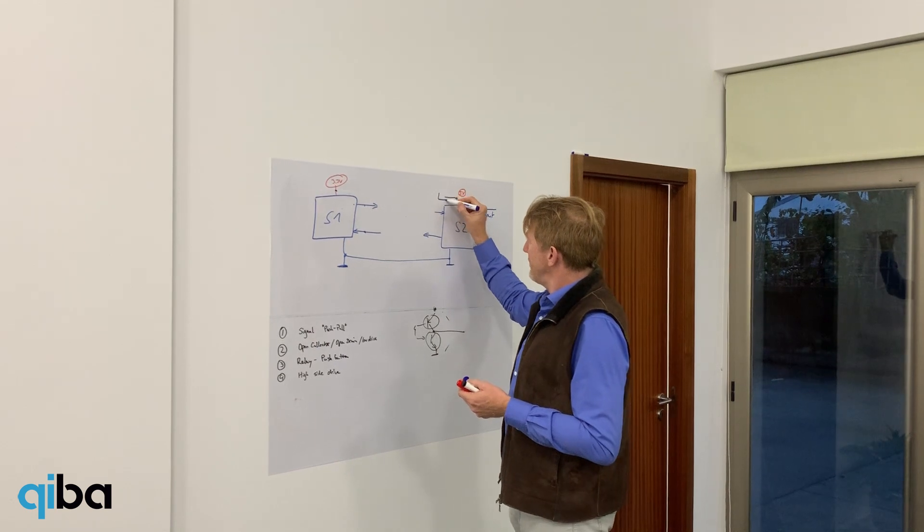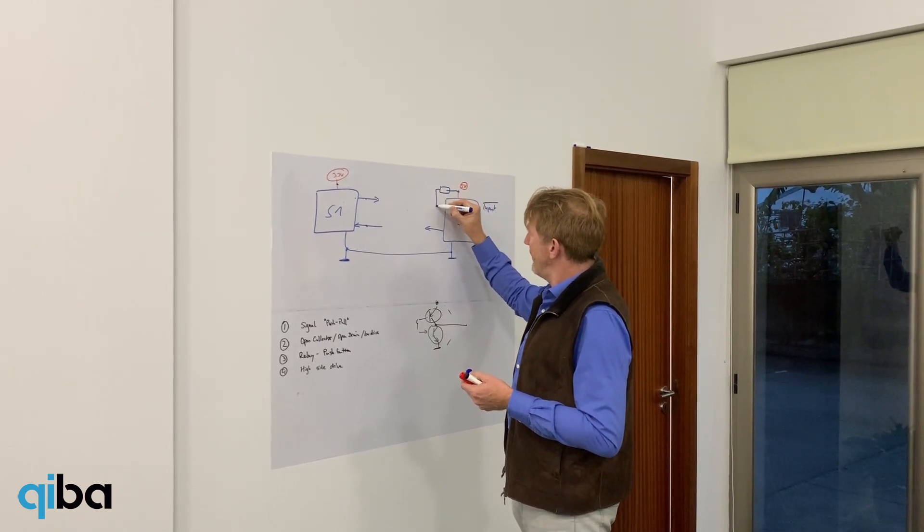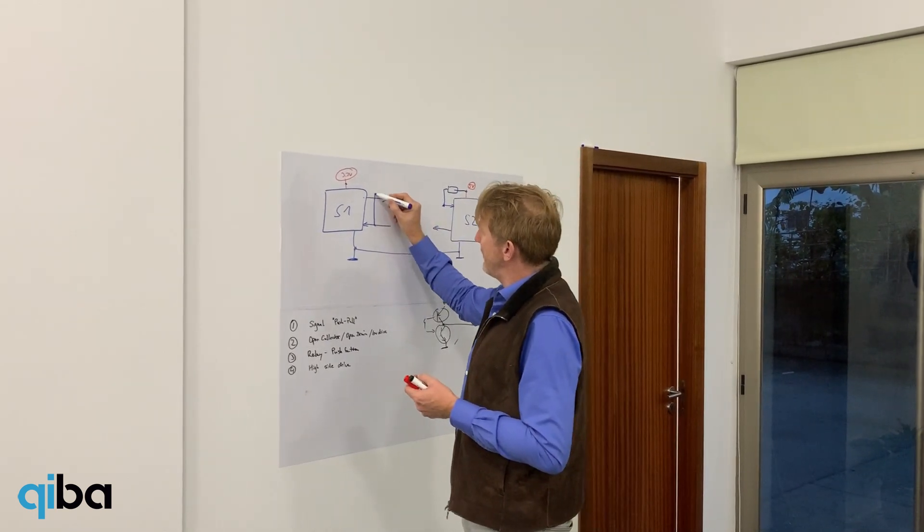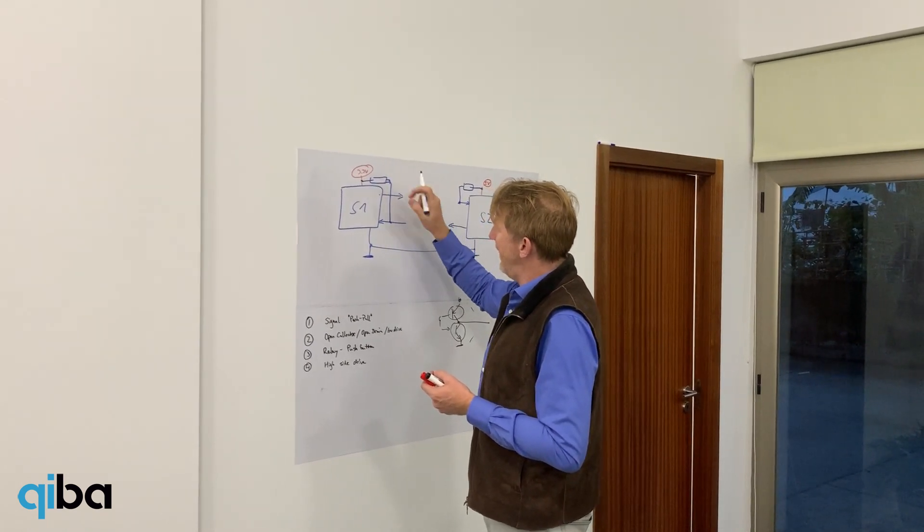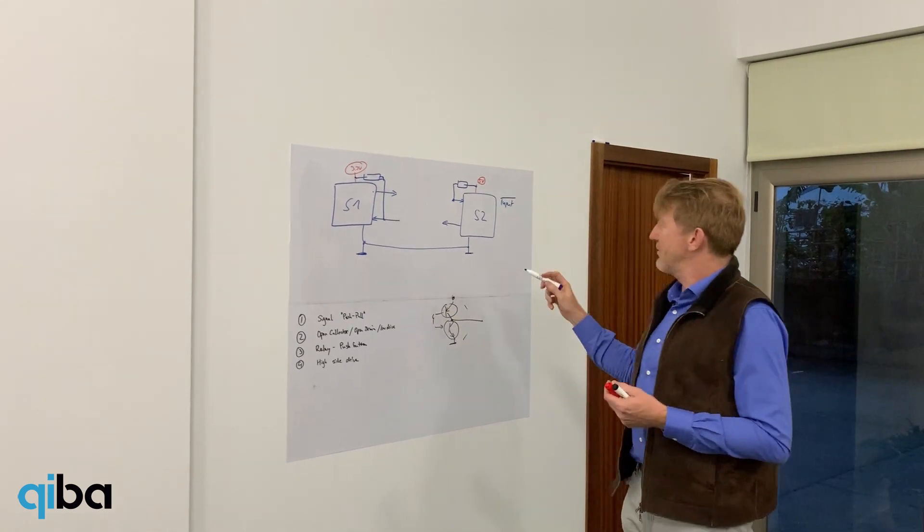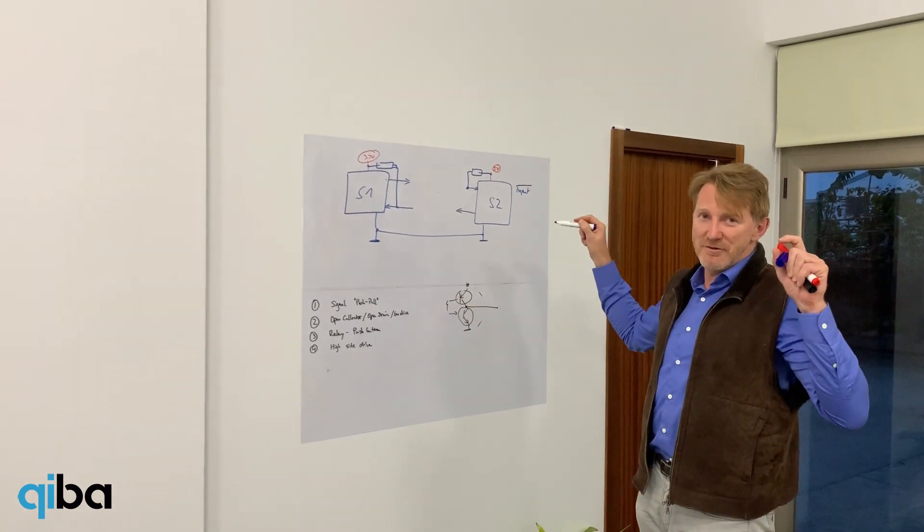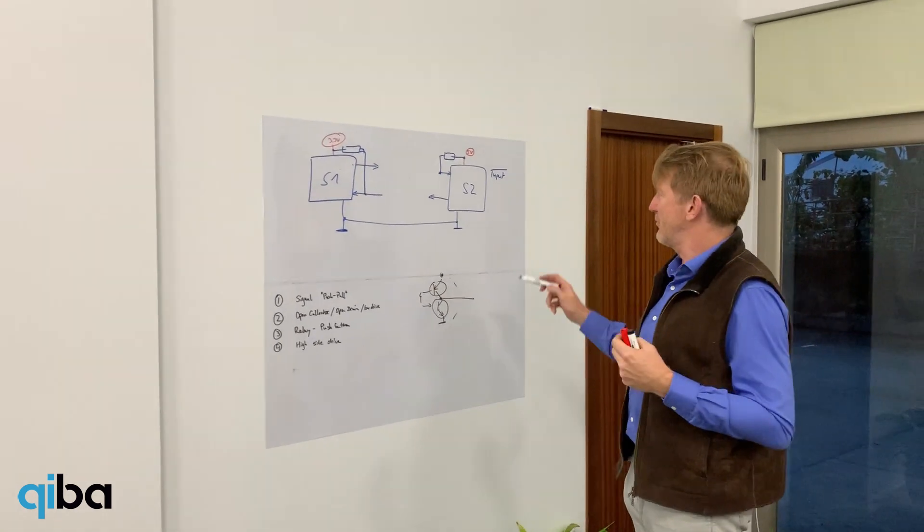To do that, we typically add a pull-up to the input. With that pull-up, we make sure that the signal there is seen as high, high being inactive. So these signals are kind of inverted, they get active when they are close to ground.